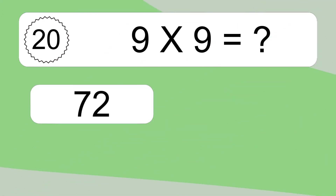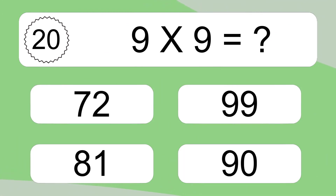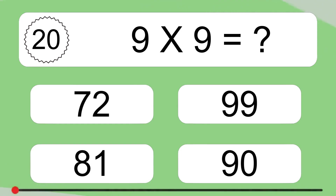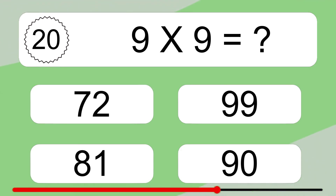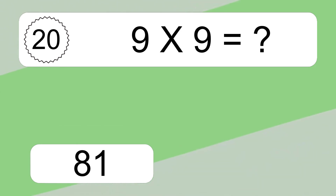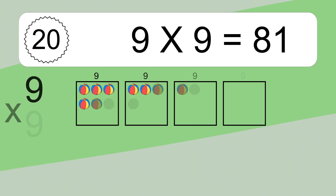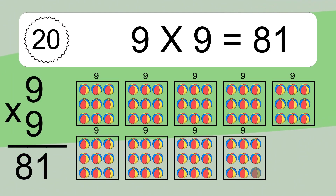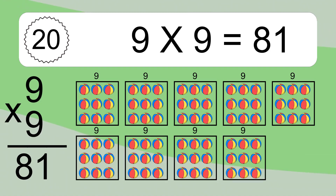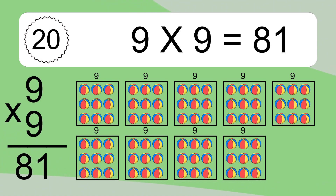Nine times nine equals what? Nine times nine equals 81. We have nine boxes, and each box has nine colorful balls inside. If you count all the balls in all the boxes together, you will have nine times nine balls. This equals 81 balls.